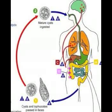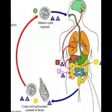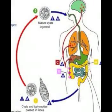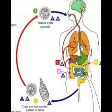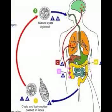The life cycle of Entamoeba histolytica begins when cysts and trophozoites, which are immature cysts, are passed through the colon and expelled in feces. The cysts are typically discovered in formed stool, with trophozoites being found in diarrheal stool.